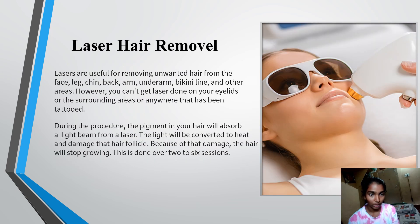Laser Hair Removal. Lasers are useful for removing unwanted hair from the face, leg, chin, back, arm, underarm, bikini line and other areas. However, you can't get laser done on your eyelids or the surrounding areas or anywhere that has been tattooed. During the procedure, the pigment in your hair will absorb a light beam from a laser. The light will be converted to heat and damage the hair follicle. Because of that damage, the hair will stop growing. This is done over 2 to 6 sessions.